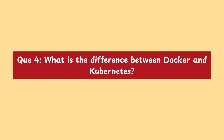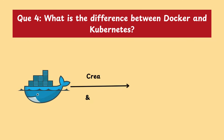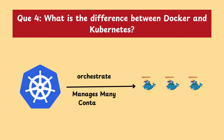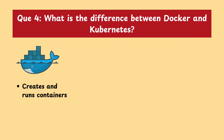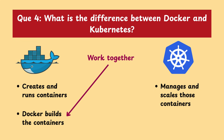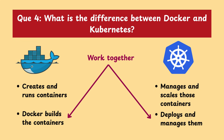Moving on with our next question: what is the difference between Docker and Kubernetes? Docker is a tool used to create and run containers, which package applications with their dependencies. Kubernetes, on the other hand, is used to orchestrate and manage many containers across multiple machines. In simple terms, Docker creates and runs containers and Kubernetes manages and scales those containers in production. They often work together — Docker builds the containers and Kubernetes deploys and manages them.